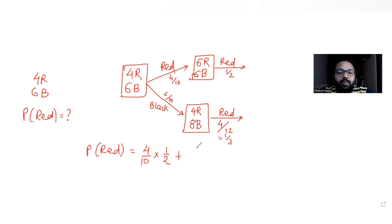Or I can first pick black, that is the probability of 6 by 10, and after that in the second case I can have a red ball with probability of 1 by 3. So now what I get here is 2 by 10 plus 2 by 10, that is 4 by 10 or 2 by 5.